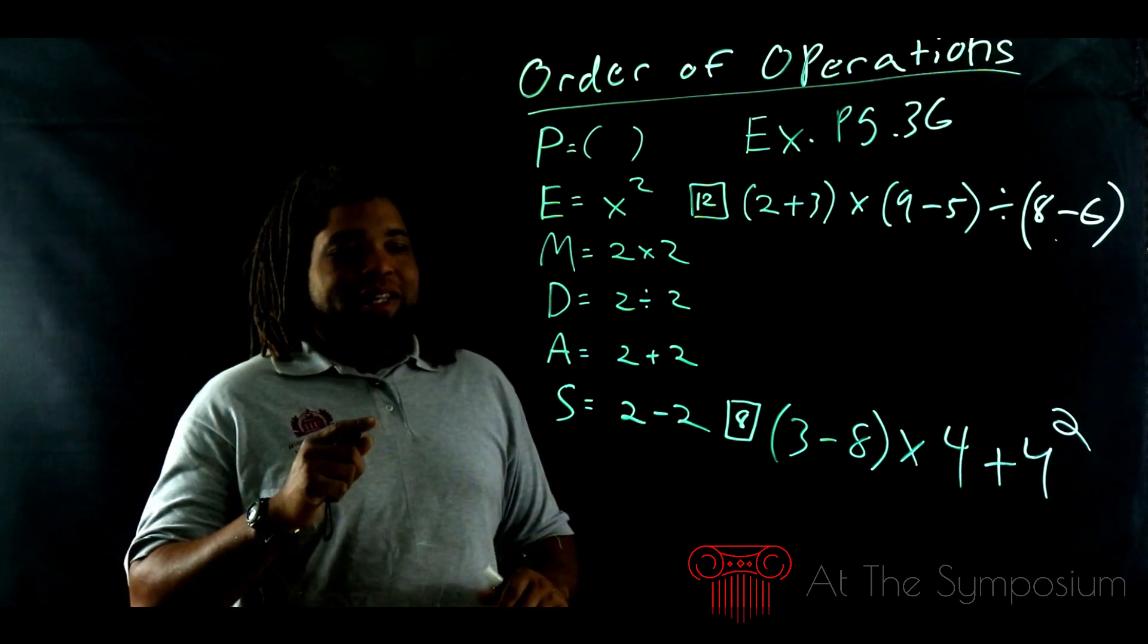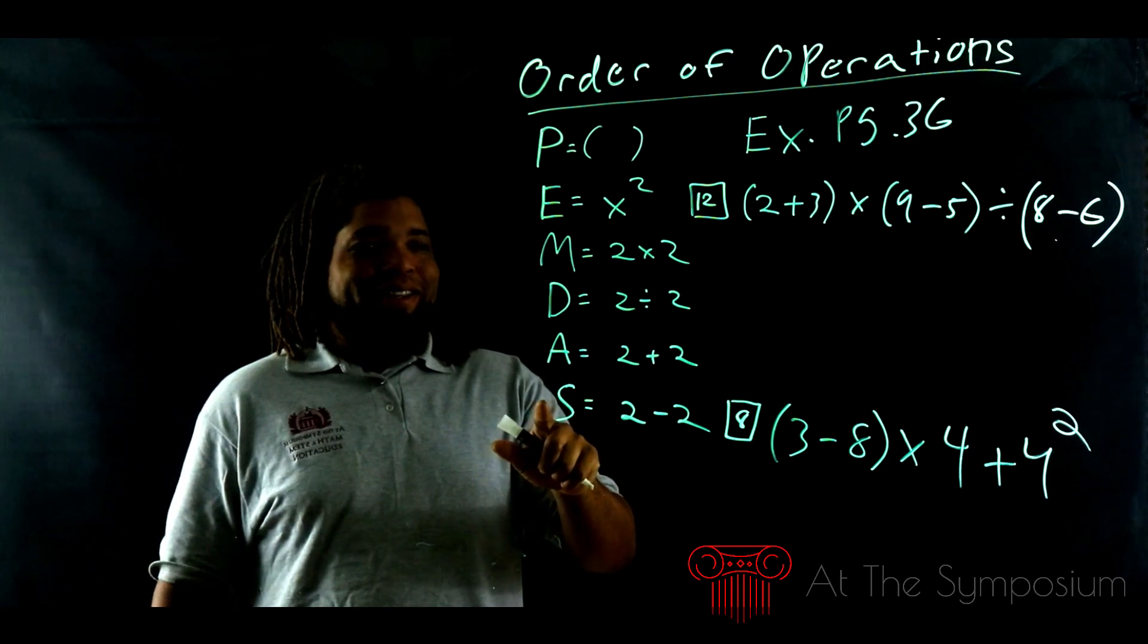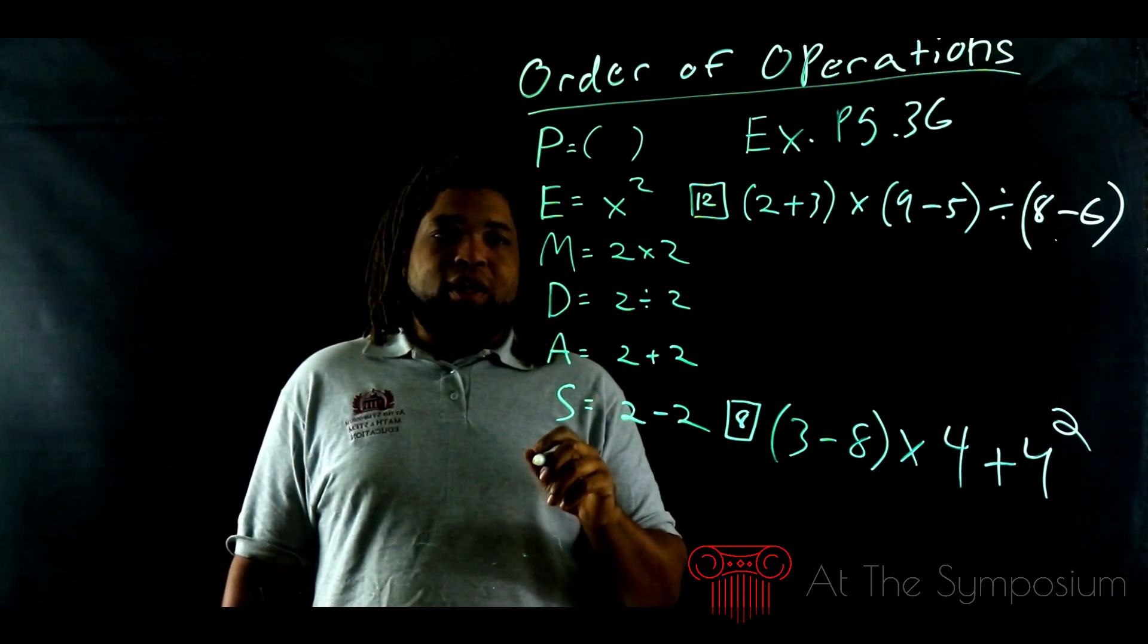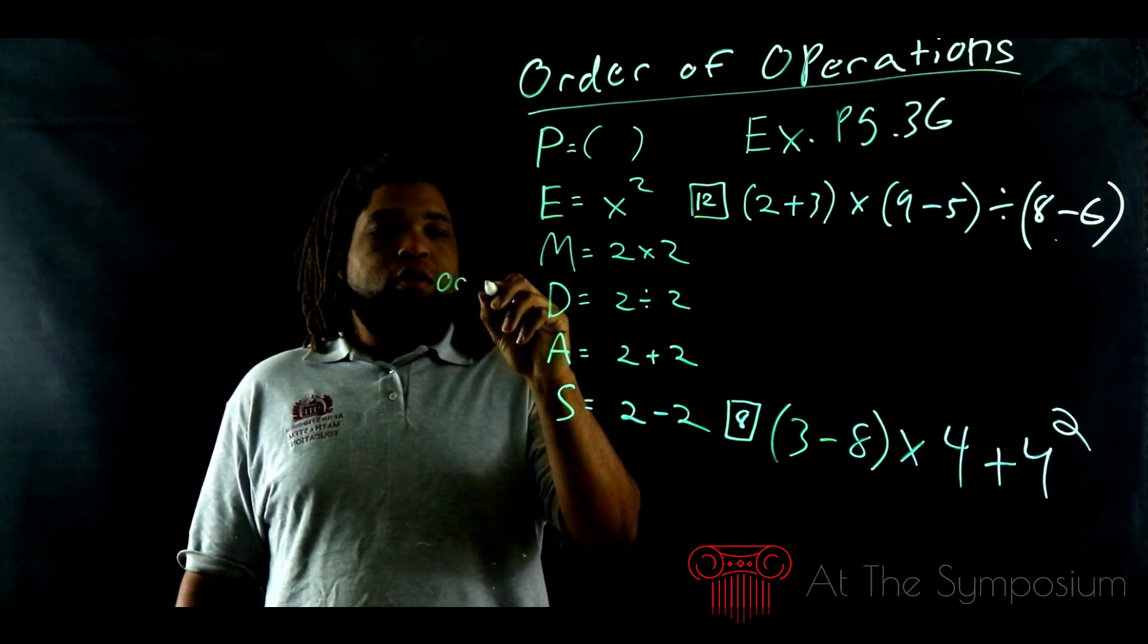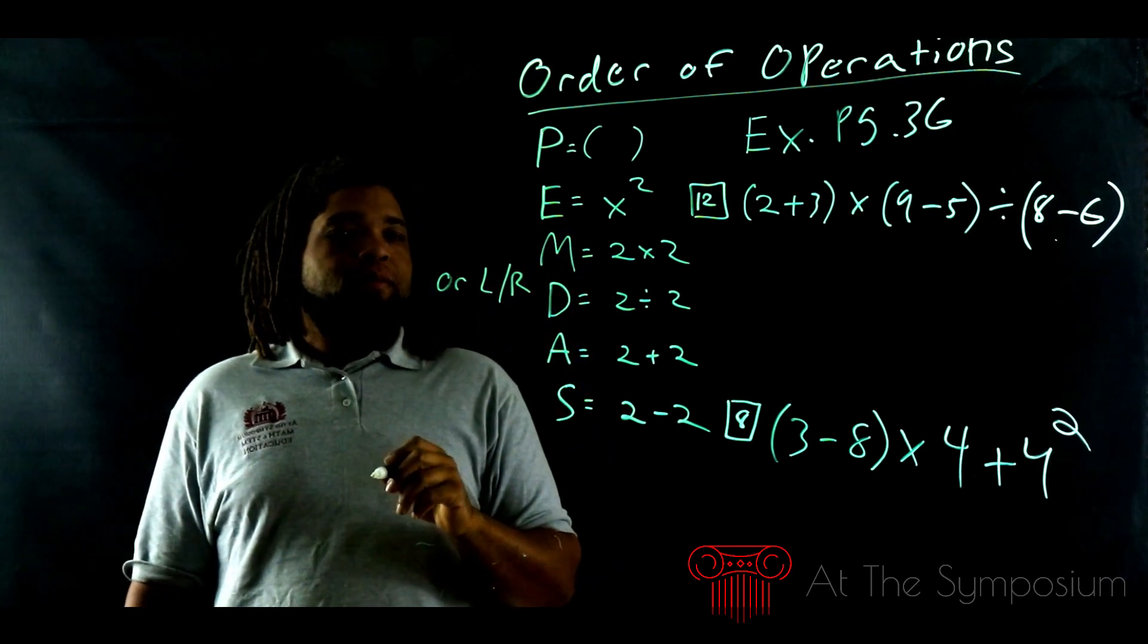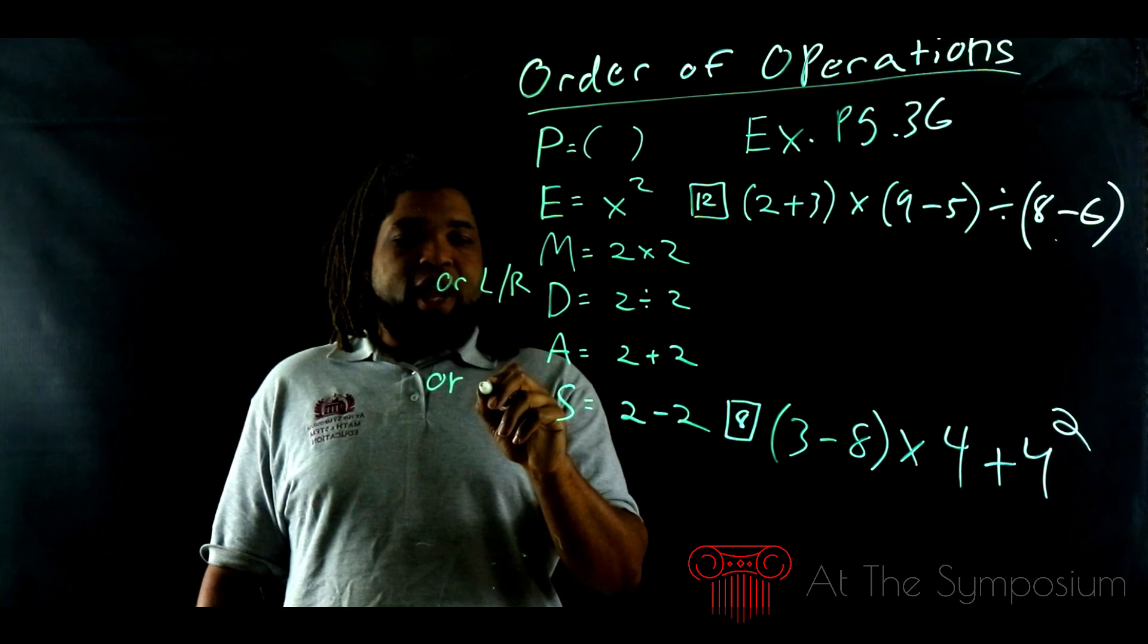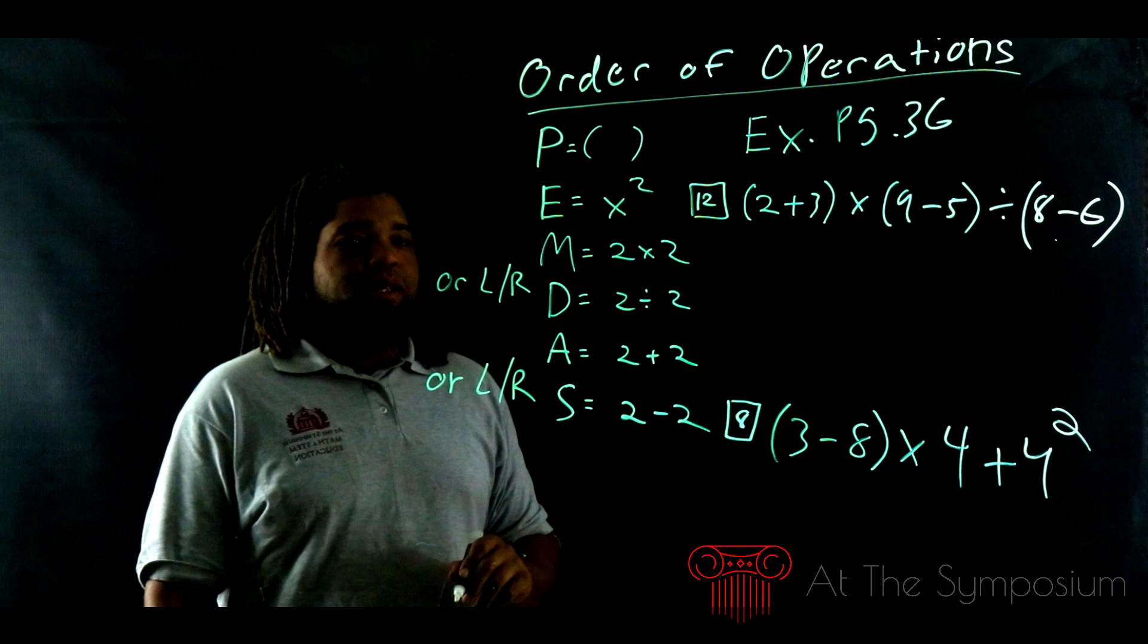But here's the deal with multiplication, division, and addition and subtraction. The thing is, we don't just do it in sequence like we do your parentheses and your exponents. What happens with multiplication and division, you do multiplication or division from left to right. Addition and subtraction, they happen from left to right as well.